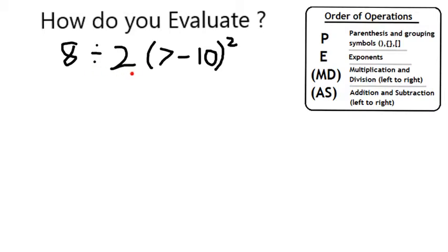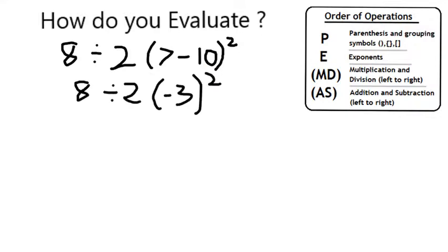To evaluate an expression like this, we want to apply our order of operations. First, we're going to start with what's inside the parentheses. In this case, 7 minus 10 will be negative 3.